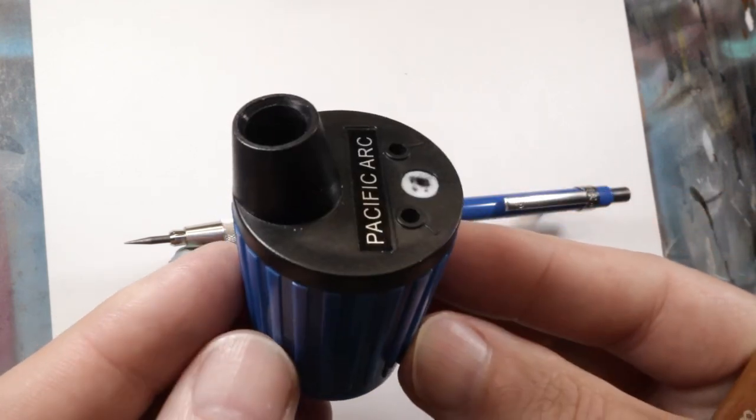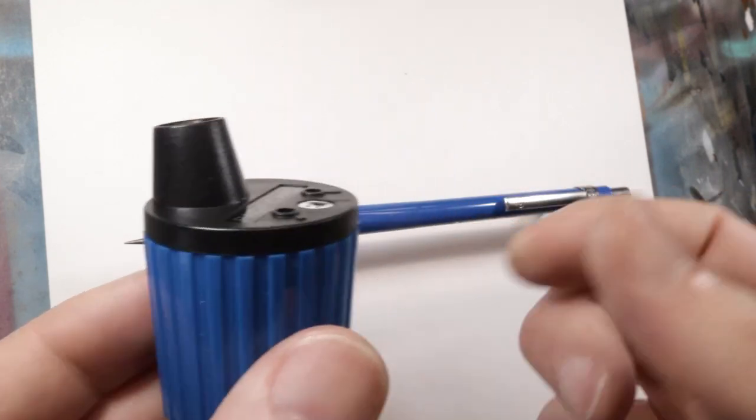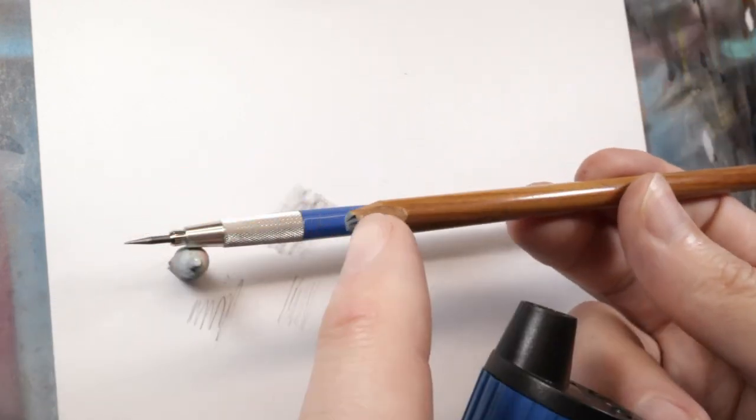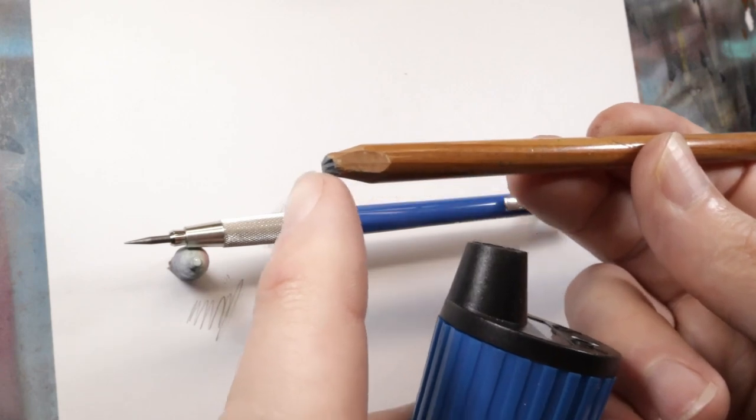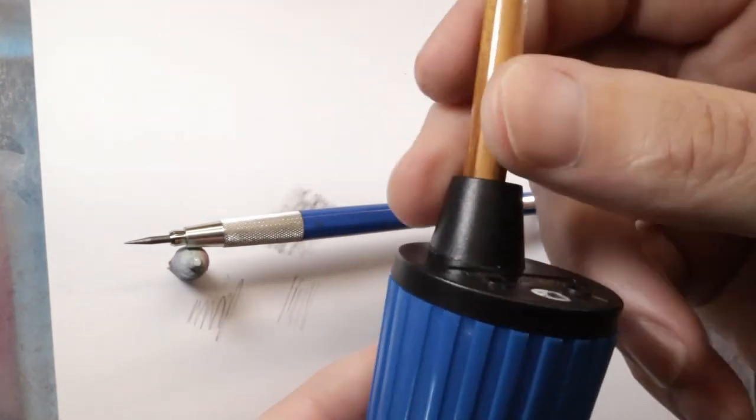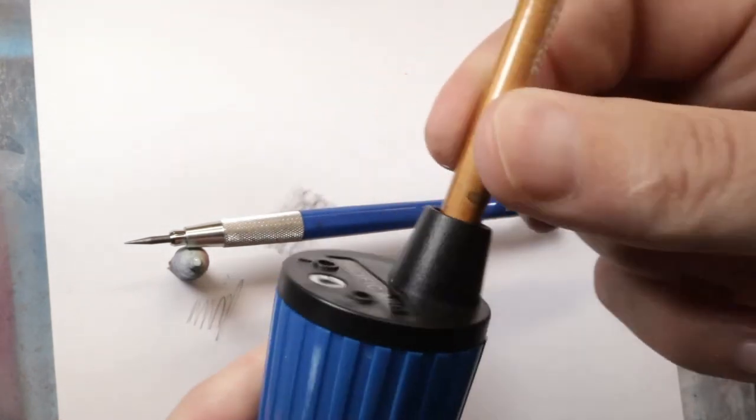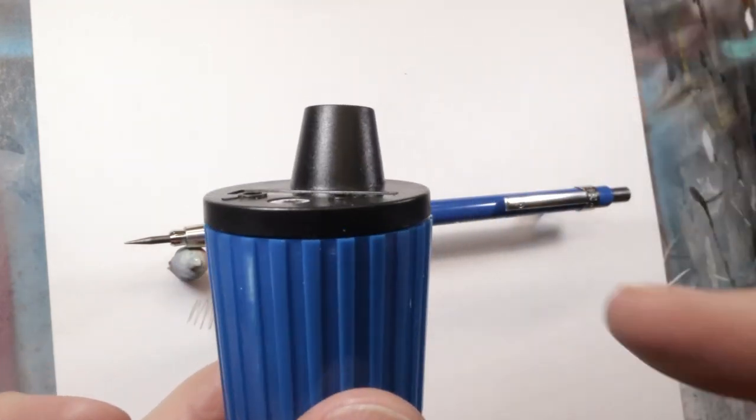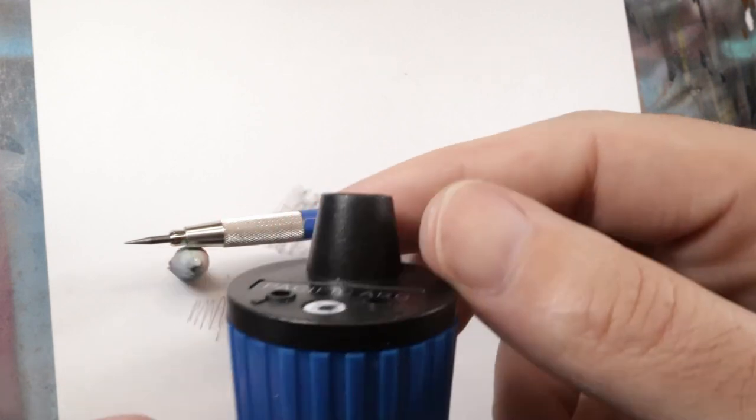So I bought a new one just to have it and this is what it looks like. Now if you take a regular pencil, this is actually a pastel pencil, they'll give you an idea with all the wood on it and then what would be graphite. If you put this in here nothing's going to happen, it won't sharpen it at all.